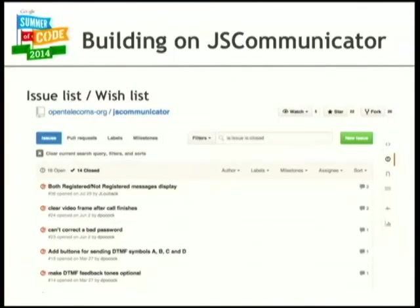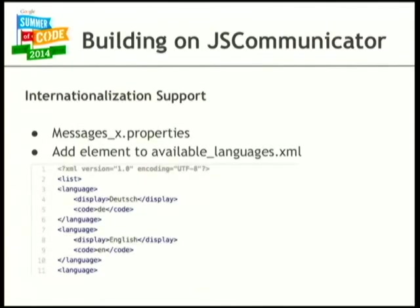During Google Summer of Code I went through the wish list and fixed features to make JSCommunicator more user-friendly. One feature I'm most proud of is agnostic internationalization support. Previously, a student had contributed a French translation, but it was only for French. I turned it into a language-agnostic feature that's easy enough for someone with no tech experience to handle.